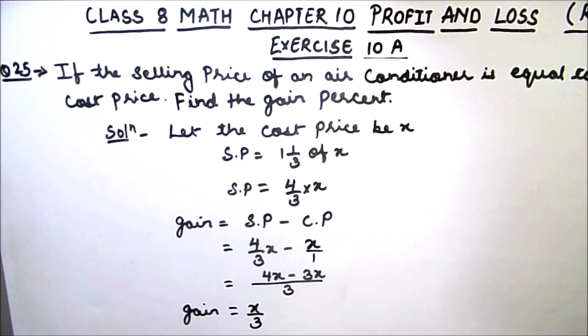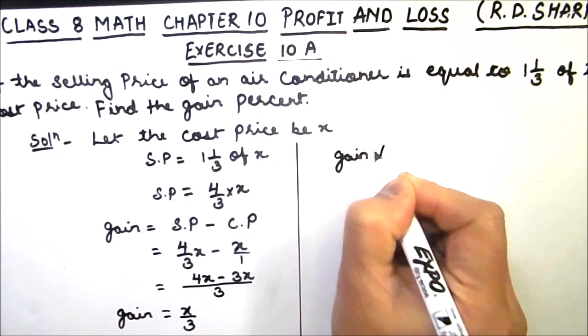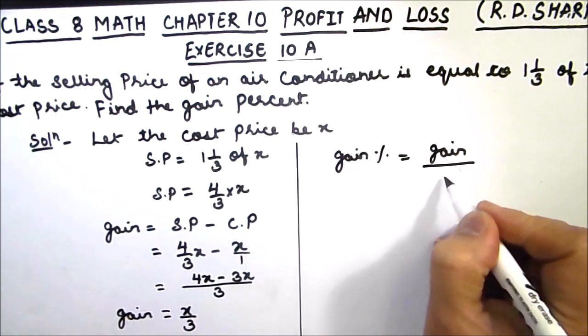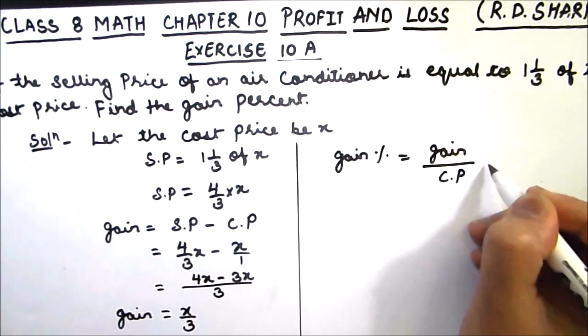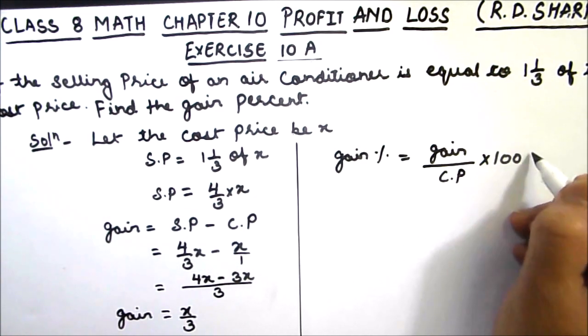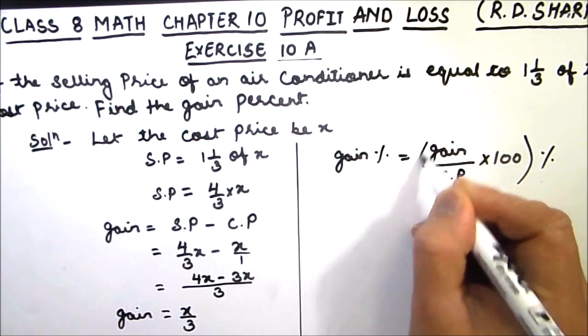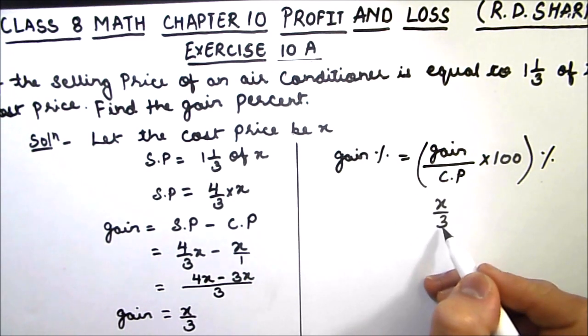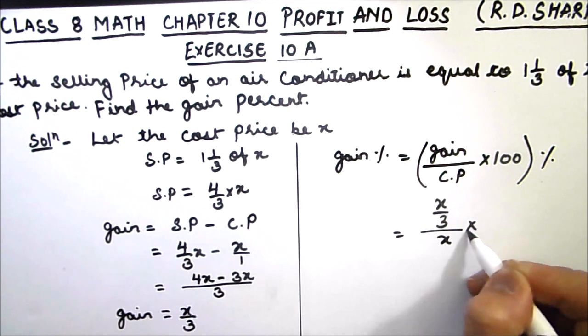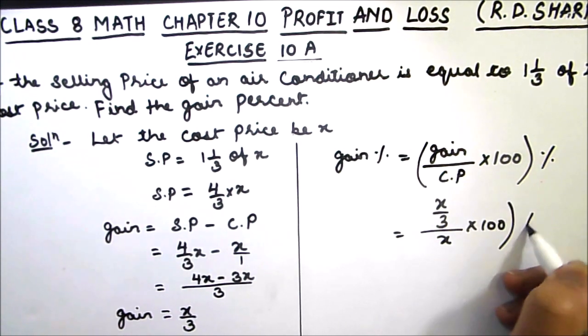Now for finding gain percent, we are going to use the formula for gain percentage, which is gain percent is equal to gain divided by cost price times 100. So here gain is x/3 and cost price is x times 100 whole percentage.